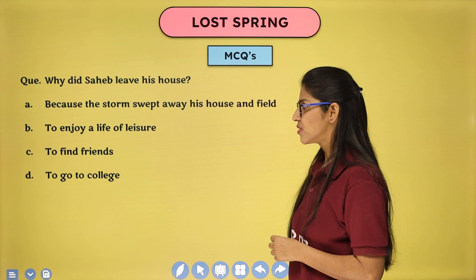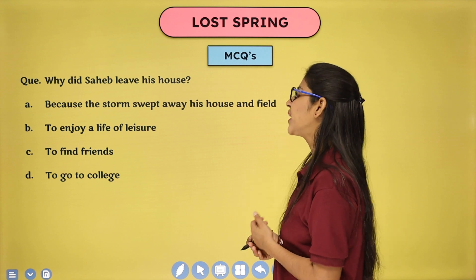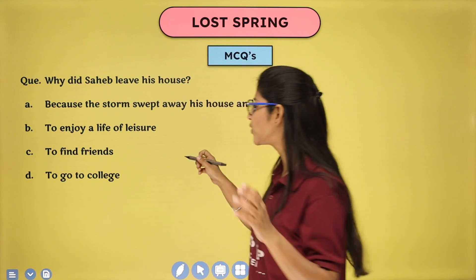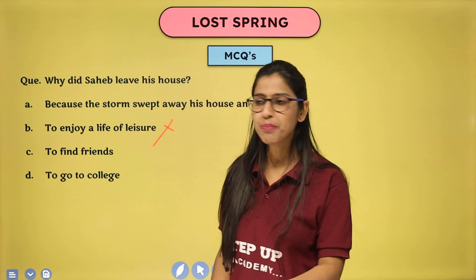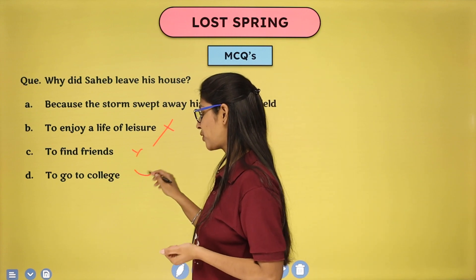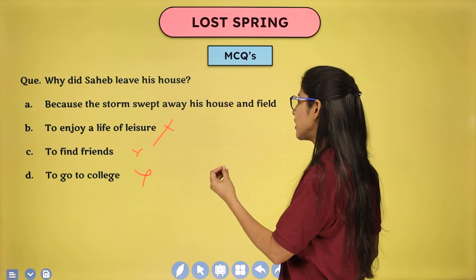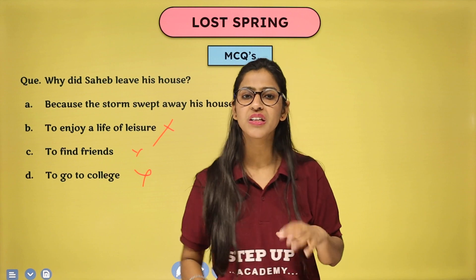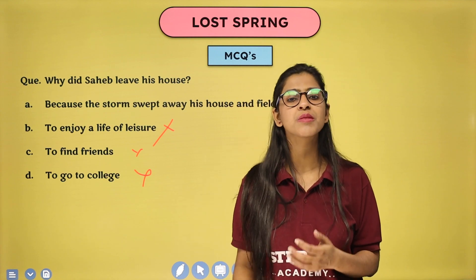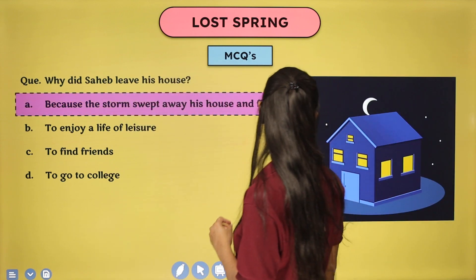Why did Sahib leave his house? Options: a storm swept away his house and field; to enjoy a life of leisure; to find friends; to go to college. We can eliminate 'leisure,' 'friends,' and 'college' right away — rag-picking doesn't match those at all. The correct answer is: a storm came in Dhaka, a very intense tufaan (storm) which completely destroyed their house and entire field. Because of this, they were forced to leave Dhaka and come to live in the slums of Seemapuri on the outskirts of Delhi.